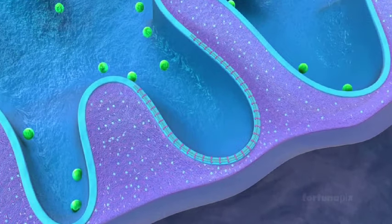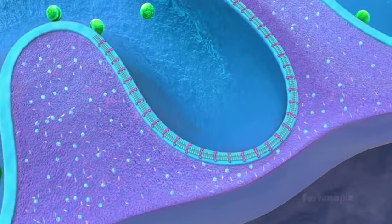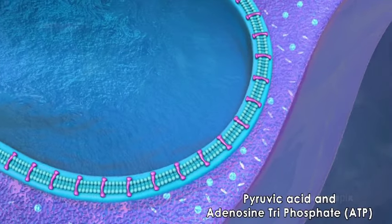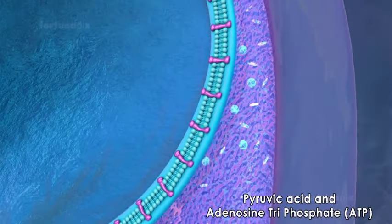The inner membrane is selectively permeable to certain molecules such as pyruvic acid and adenosine triphosphate ATP.